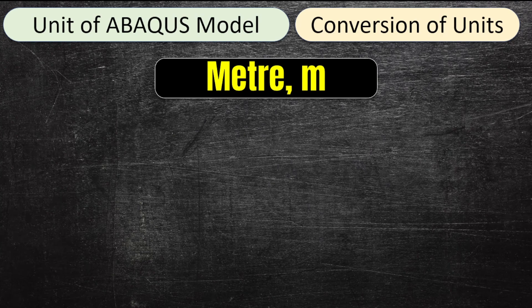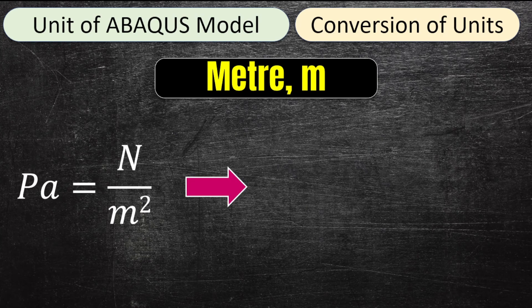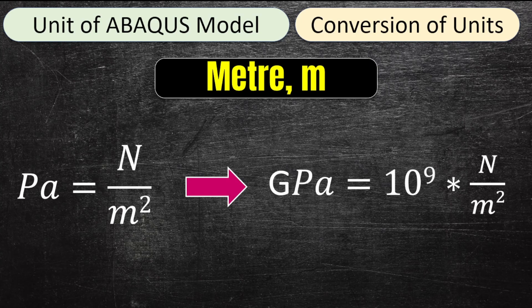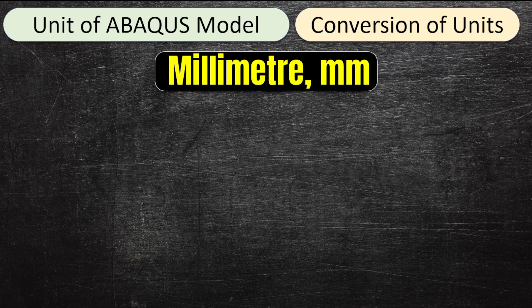Assuming we work in meters, one parameter we need to specify is Young's modulus, specified in Pascals — which is newtons per meter squared. For gigapascals, that means we're looking at 10^9 newtons per meter squared. Now if we decide to work with a millimeter system — since Abacus doesn't have a prescribed unit system — we need to convert.